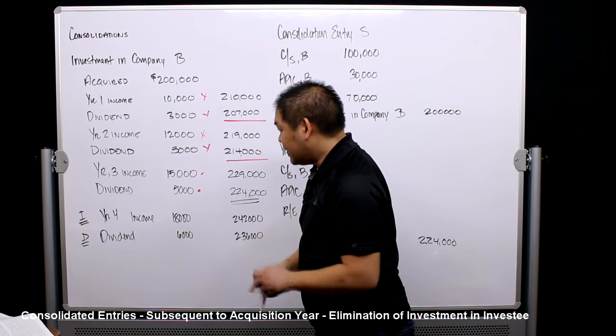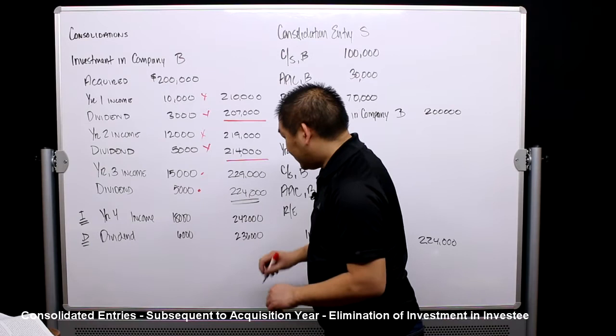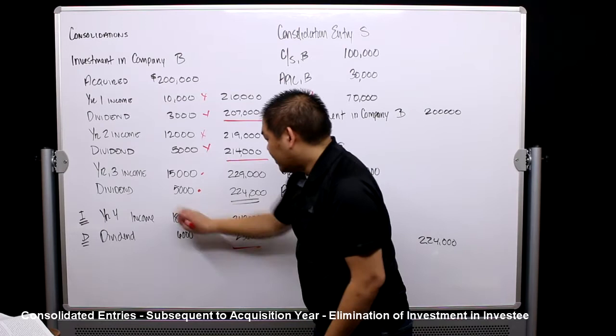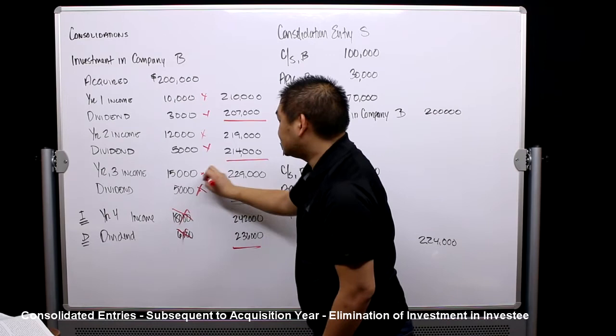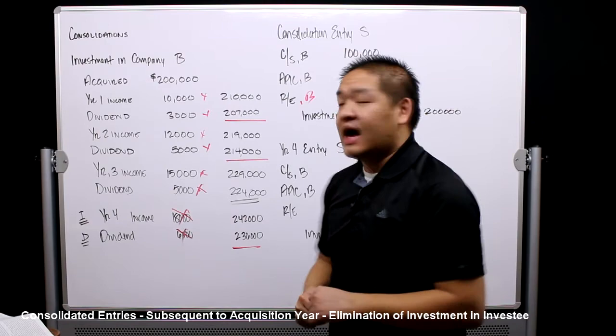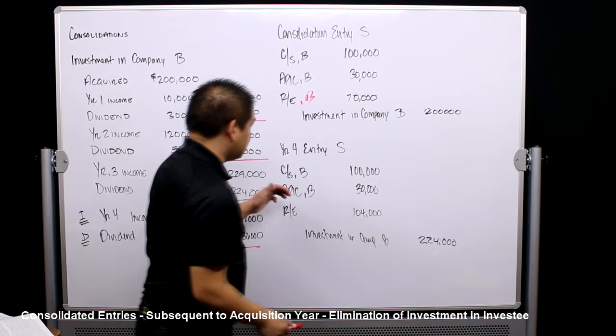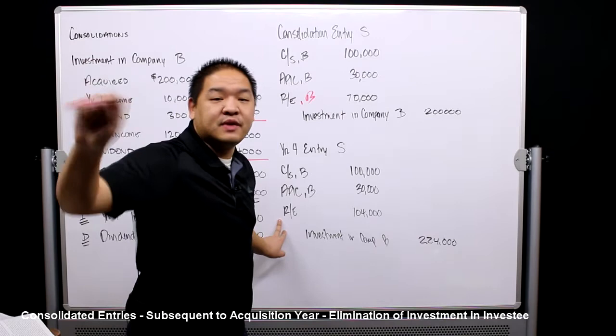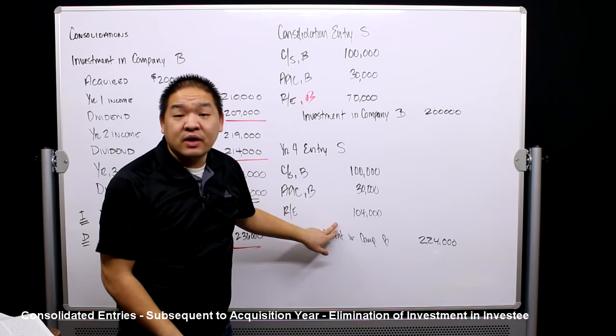At the end of year four, income is $18,000 and dividends are $6,000, giving a new investment in Company B balance of $236,000. Consolidation entry I removes the current $18,000, and entry D removes the current $6,000, but the prior years' amounts still haven't been removed. The key point is that Company B's retained earnings on their books have now increased from $70,000 to $104,000.